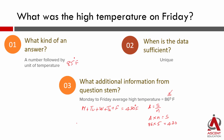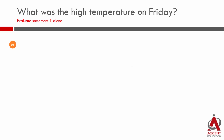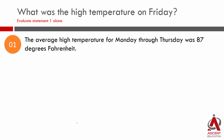Let's evaluate Statement 1. Statement 1 essentially states that the average high temperature for Monday through Thursday was 87 degrees Fahrenheit. From the question stem, the sum of temperatures from Monday to Friday equals 430.